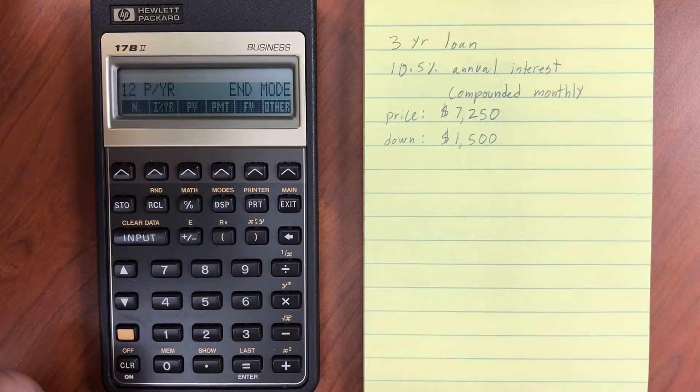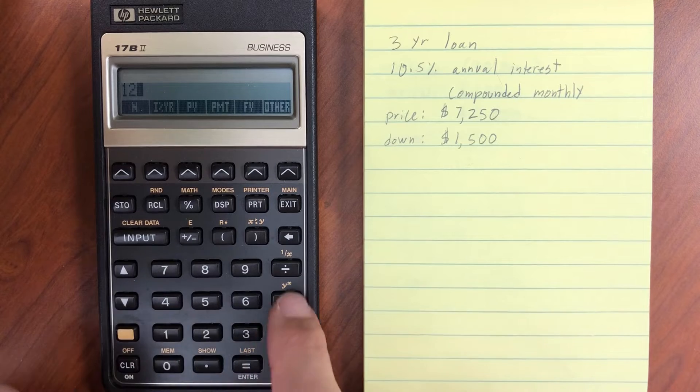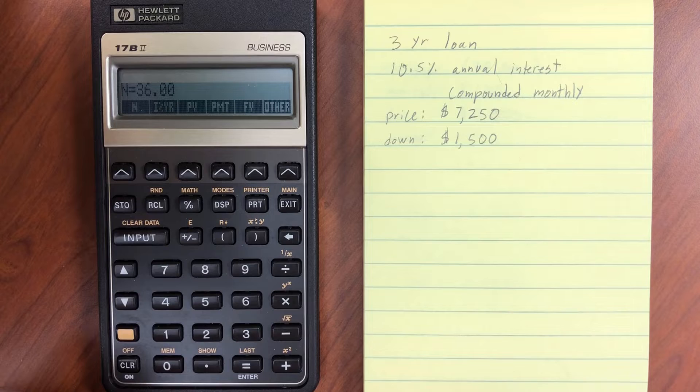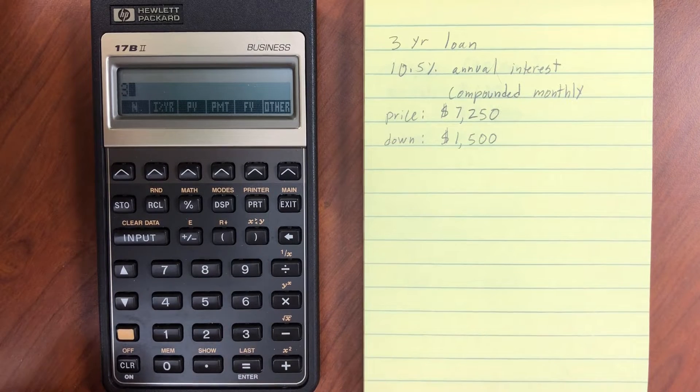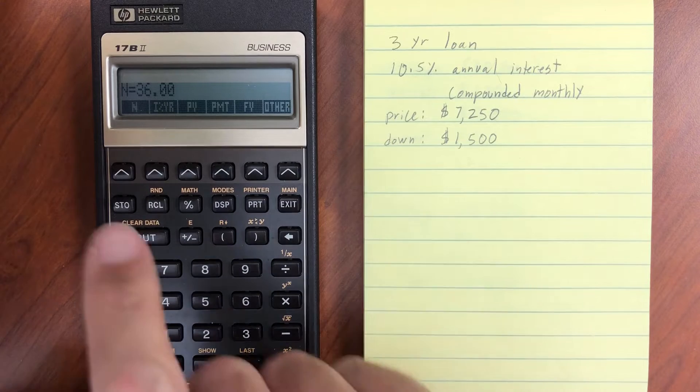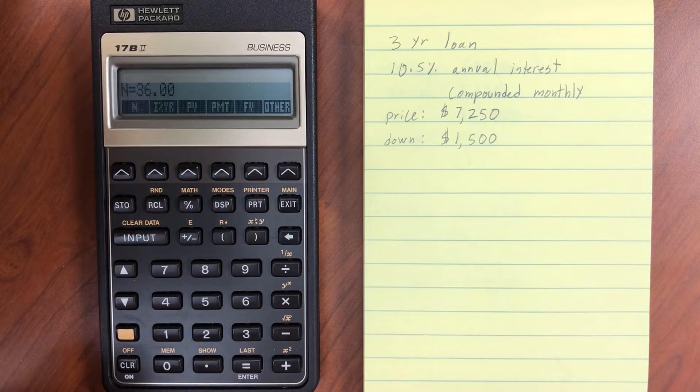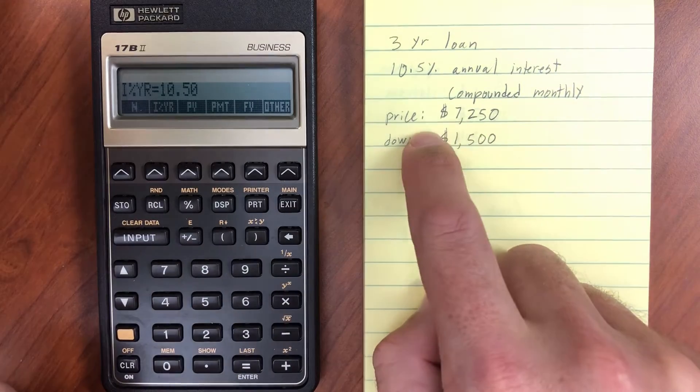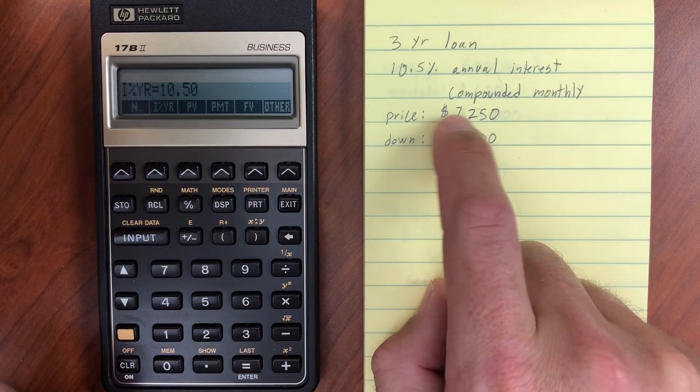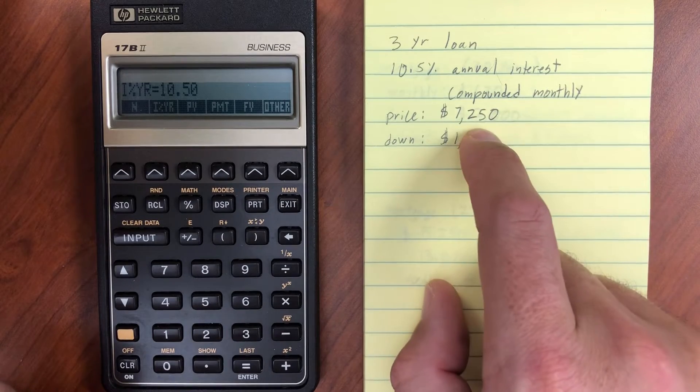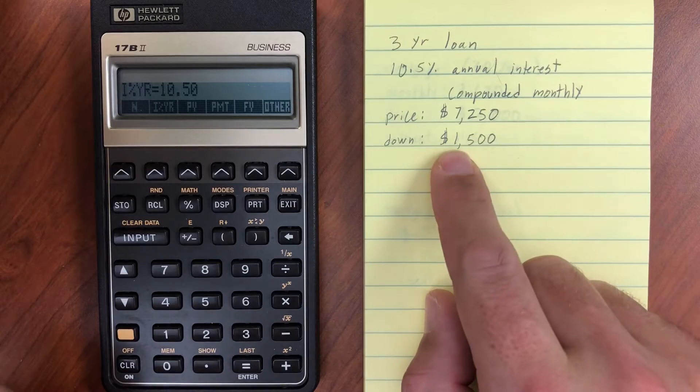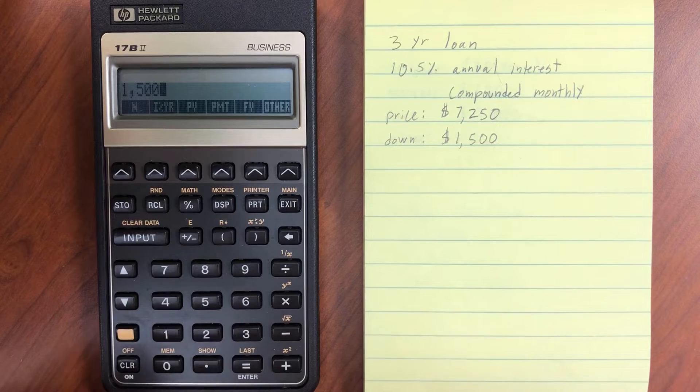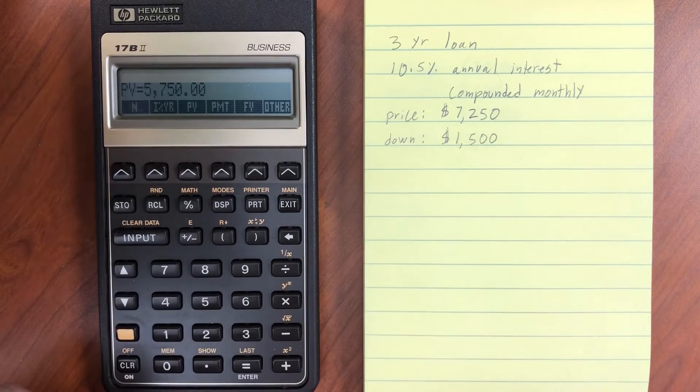Let me go ahead and clear data here. It's a good idea to do that before you do any calculation. So we've got a three-year loan, so I could enter 3 and then 12 to get 36 and then enter that in my N. Or a shortcut is, since we've got it set to 12 periods per year, I could do three years and do shift N, and that will automatically enter 36. An interest rate of 10.5, a present value of, we have here, a price of 72.50 as the loan amount or the price of the object we're going to buy, but we're going to put $1,500 down. So 72.50, subtract $1,500, and we'll enter that as our present value.